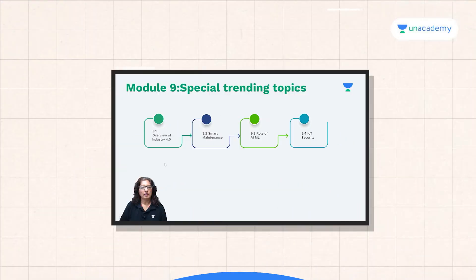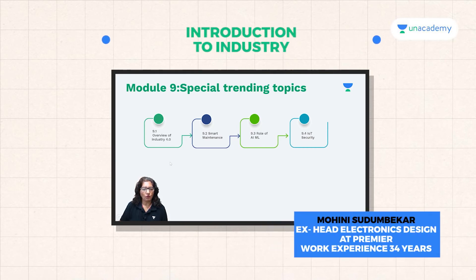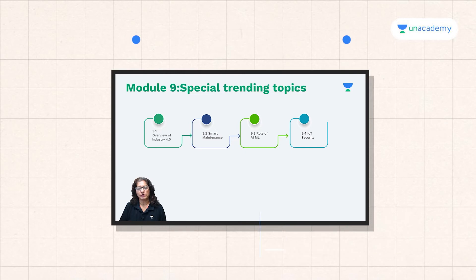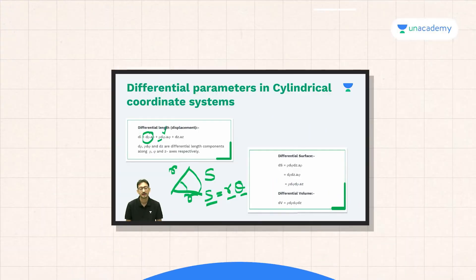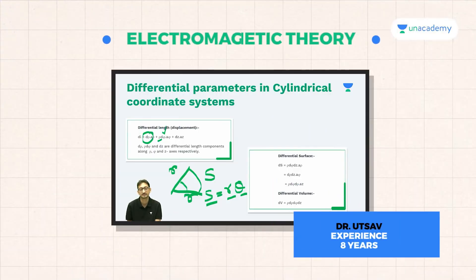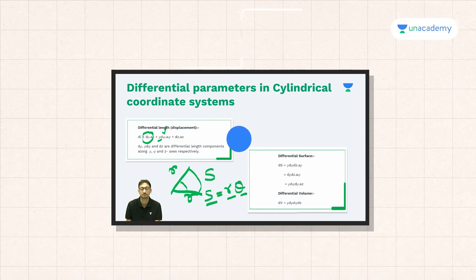They involve the complete overview of Industry 4.0, smart maintenance, role of AI and ML, and IoT security. Having noted these length parameters in the cylindrical coordinate system, now let us focus on finding the area components in the cylindrical coordinate system.